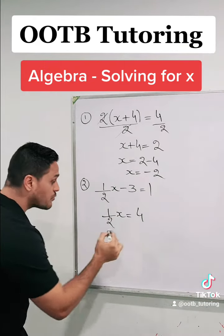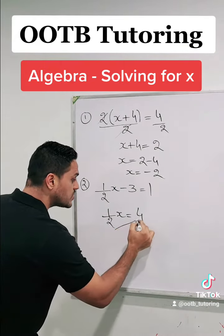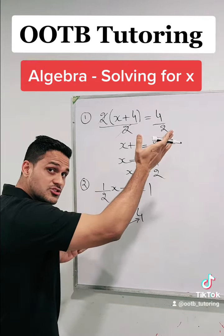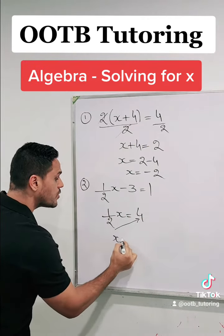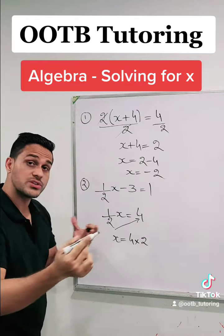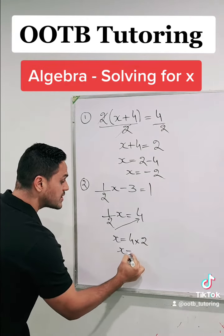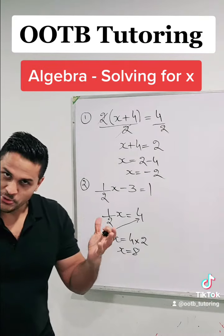In the next step, we'll cross-multiply the 2. When this goes across, it will land at the top. We'll multiply by 4, so we'll end up with x = 4 × 2, which means x = 8. Thank you.